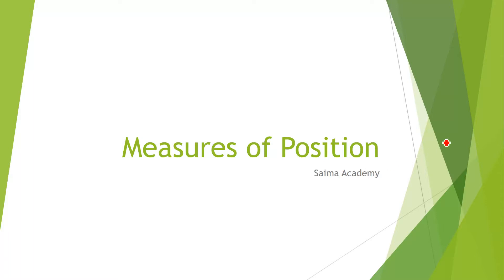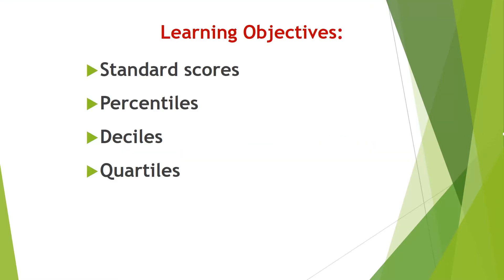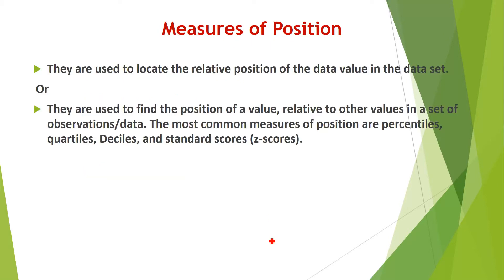In this lesson I will explain measures of position. The learning objectives are standard scores or Z scores, percentiles, deciles, and quartiles. In this lesson I will focus on standard scores and Z scores; percentiles, deciles, and quartiles will be discussed in the next lesson.